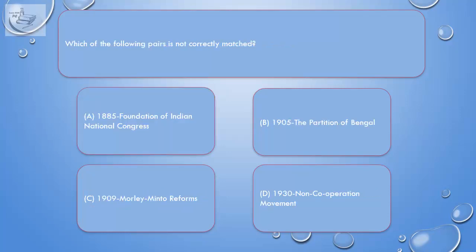Question: Which of the following pairs is not correctly matched? A. 1885 – Foundation of Indian National Congress. B. 1905 – The Partition of Bengal. C. 1909 – Morley-Minto Reforms. D. 1930 – Non-cooperation movement.